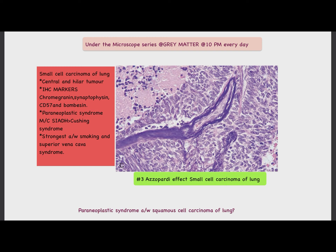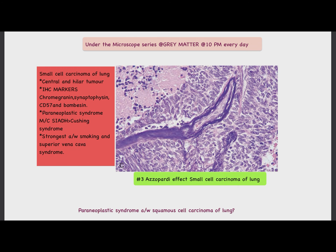The basophilic staining of the vascular wall is due to leaked out delicate nuclear material from the necrotic tumor cells. Since small cell carcinoma of the lung is an aggressive tumor, necrosis of the tumor cells causes leaking out of nuclear material, which stains the vessel walls bluish or basophilic.